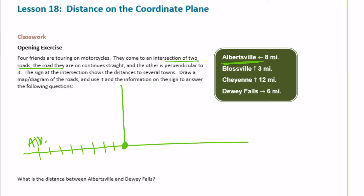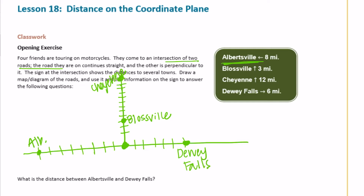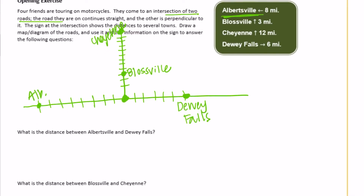Blossville is three miles north, so I'll go up three — that's Blossville. Cheyenne is 12 miles north, so starting at the origin and counting up 12: three, four, five, six, seven, eight, nine, ten, eleven, twelve — that is Cheyenne. Dewey Falls is six miles to the right: one, two, three, four, five, six — that's Dewey Falls. There's our map.